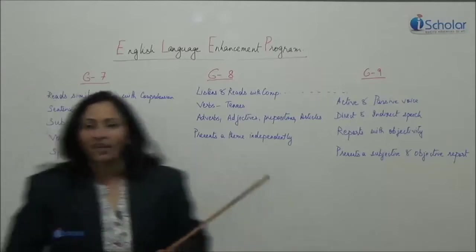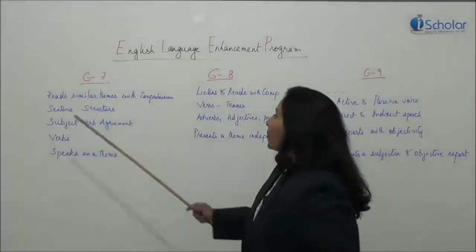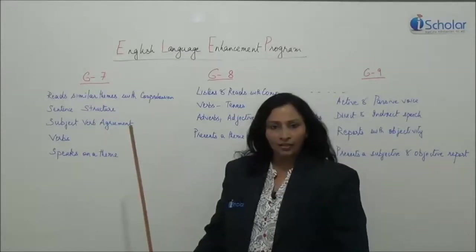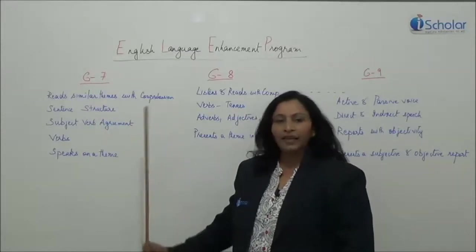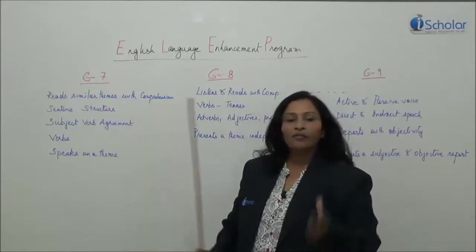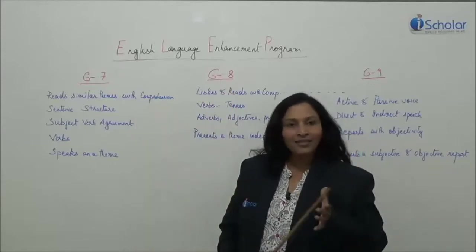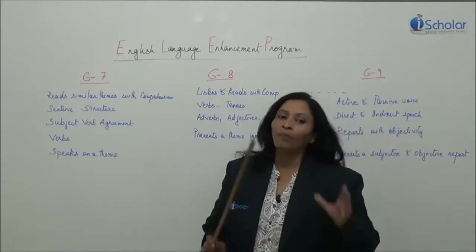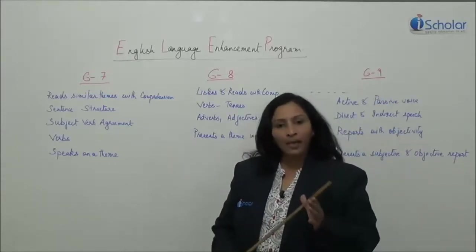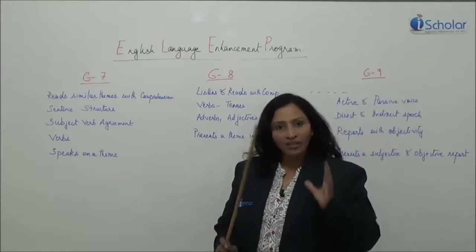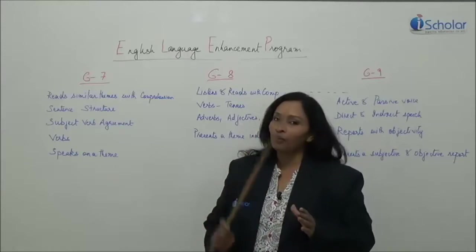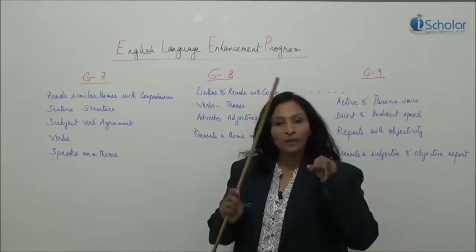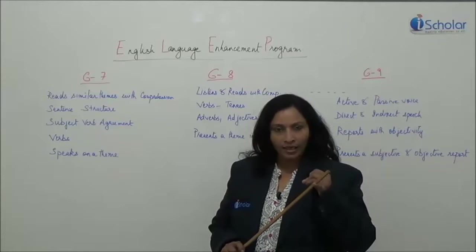We will first start with class 7. They should be able to read similar themes with comprehension — any theme that they are familiar with. Imagine they have a particular lesson based on Tenzing and Hillary's climb on Mount Everest. They should be able to read similar adventure stories and comprehend it, meaning answer questions based on factual points in the lesson.